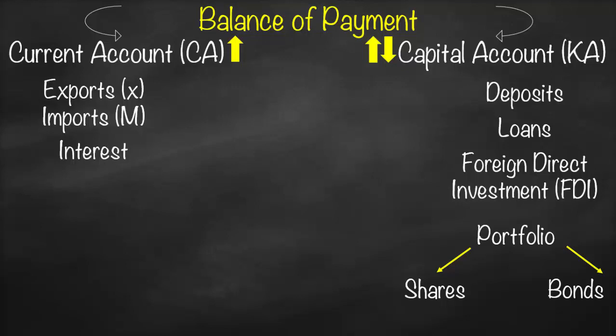The profit generated from a project is one-way — you don't repay it back — so profit is recorded under current account. Similarly, dividends distributed to shareholders are one-way and go under current account. Coupon payments received on bonds are also one-way, since you don't repay them back, so coupon payments are also classified under current account.